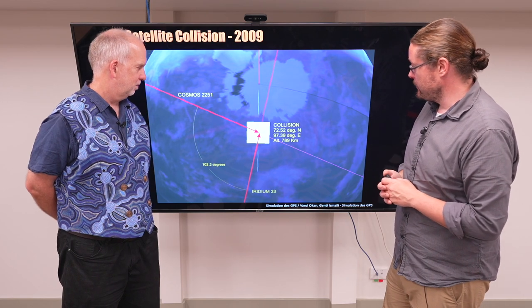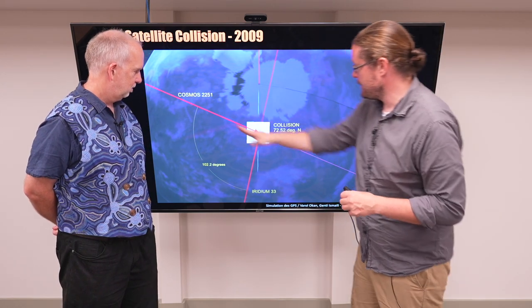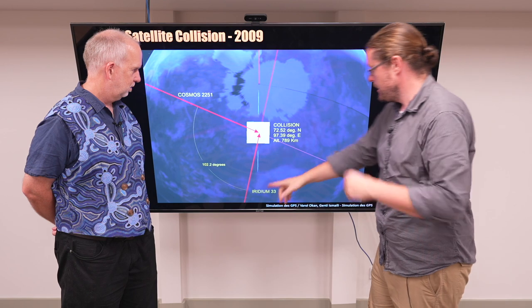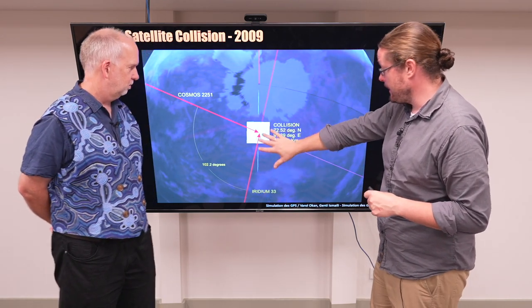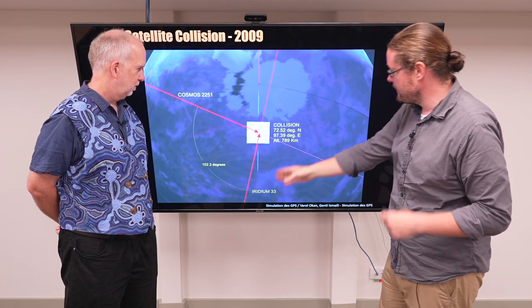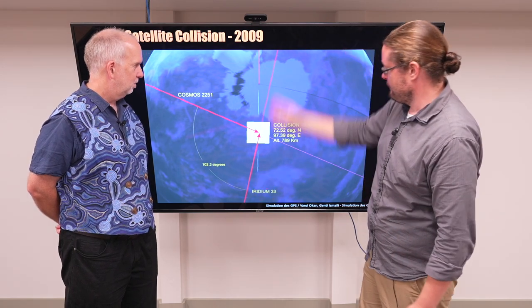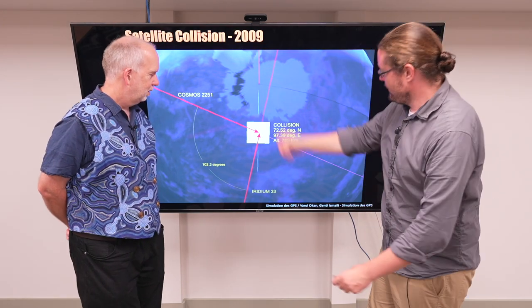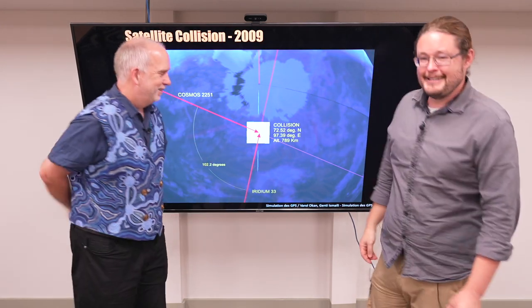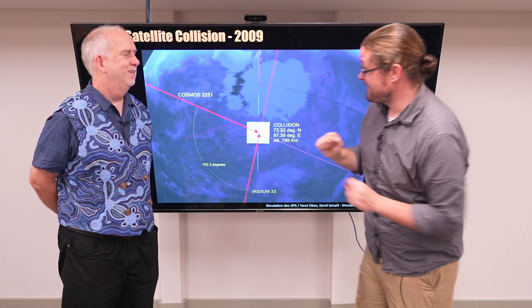Here's how it happened. We had the Cosmos satellite coming at essentially a right angle in orbit to the Iridium satellite. They ended up being at the same height and roughly the same altitude, which means as the Iridium satellite was going this way, the Russian satellite was going this way. It turned out they were going to be at the same spot at the same time.